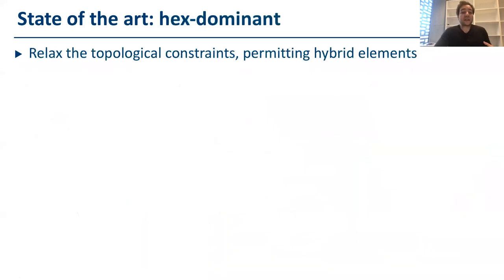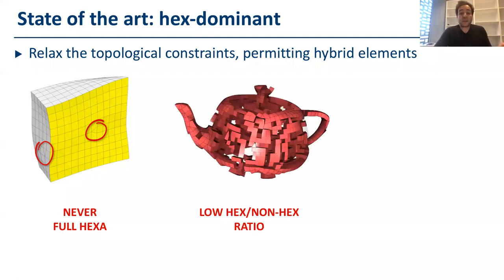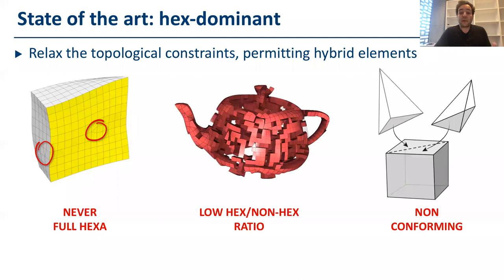One valid alternative is to relax the topological constraints and also allow the mesh to include hybrid elements. State-of-the-art non-hybrid hex-dominant meshing methods, however, sometimes fail to converge to full hex meshes, even for simple cases. Also, sometimes the amount of non-hex is really high, and most of these methods sometimes do not produce conforming meshes.